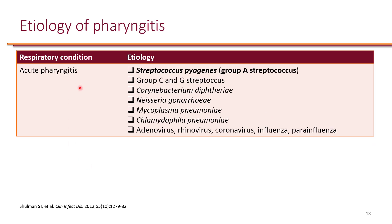For acute pharyngitis, it could be due to different causes, mostly viruses, but occasionally some other bacteria. The IDSA guidelines are specifically for Streptococcus pyogenes, or Group A strep pharyngitis. We do a throat swab, and if the patient tests positive for Strep pyogenes, that's when we treat — the treatment is primarily targeted at Streptococcus pyogenes.